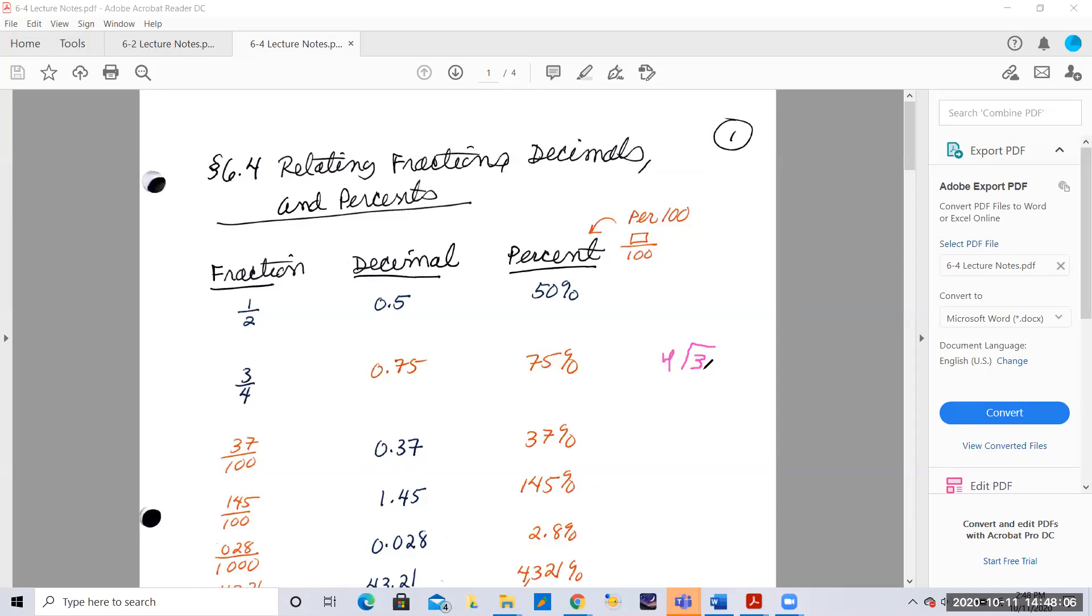Four won't go into three, so you put a decimal and add zeroes. Well, four goes into 30 seven times, and that's 28.